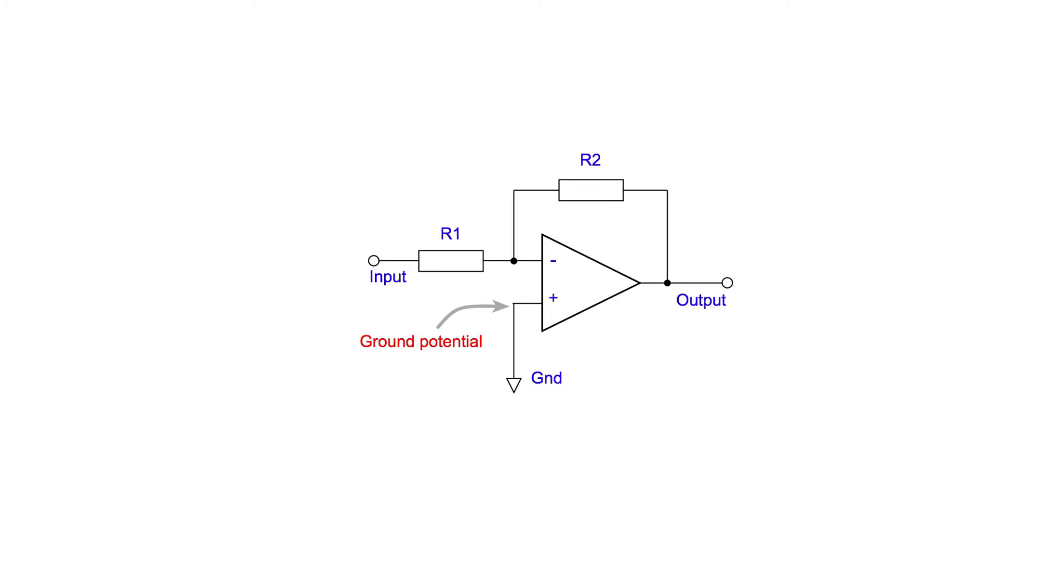For any given output voltage, this means that the difference between the two inputs of the chip will be 1 upon 10,000 of the voltage at the output. This will be very small, typically very much less than a millivolt.